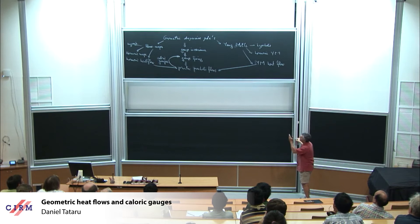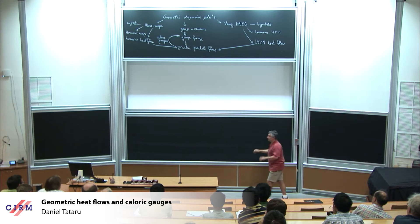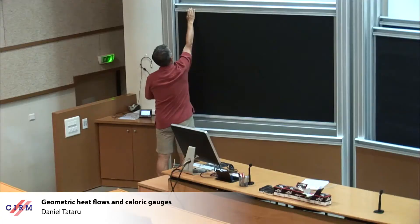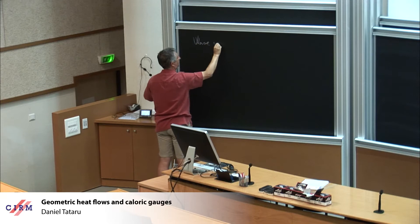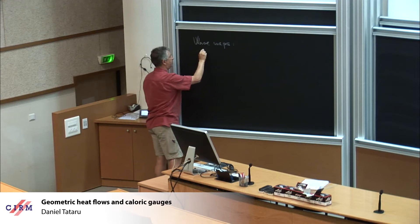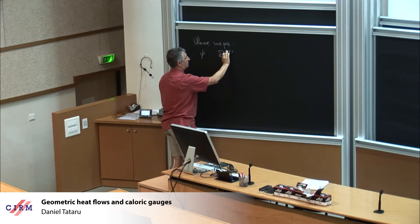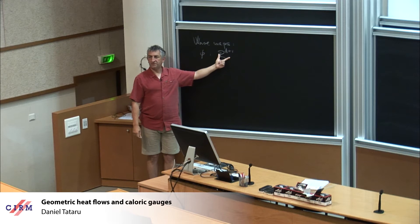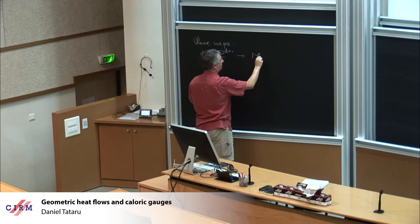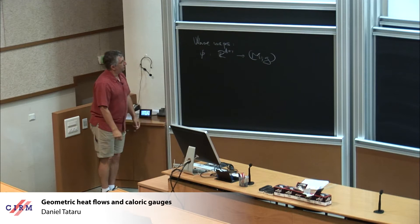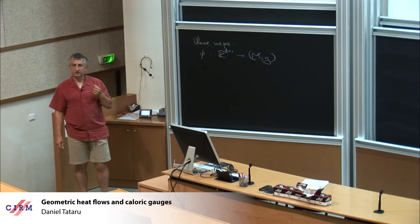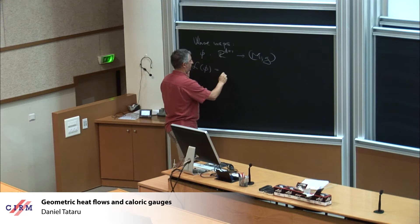Let me quickly describe these two models, the wave maps and the Yang-Mills. I'm not going to try to do things in utmost generality. Here, you're looking at maps phi from R^{d+1}, and we're going to think of this as the Minkowski space, into some Riemannian manifold (M, g). For these functions phi, you measure a Lagrangian very much like in the case of the constant coefficient wave equation: L of phi equals the integral over R^{d+1} of D_alpha phi times D_alpha phi.